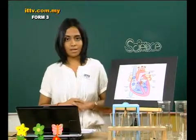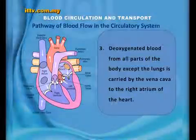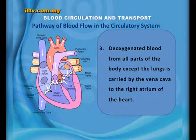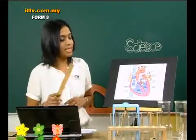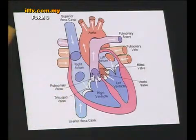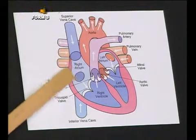Shall we have a look at what actually happens in this organ called the heart? Deoxygenated blood from all parts of the body except the lungs is carried by the vena cava to the right atrium of the heart. Blood collects from the superior vena cava and the inferior vena cava — the deoxygenated blood from our extremities, head, and so on — and comes to the right atrium.